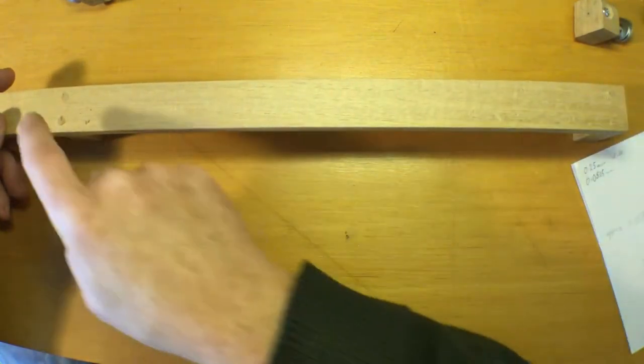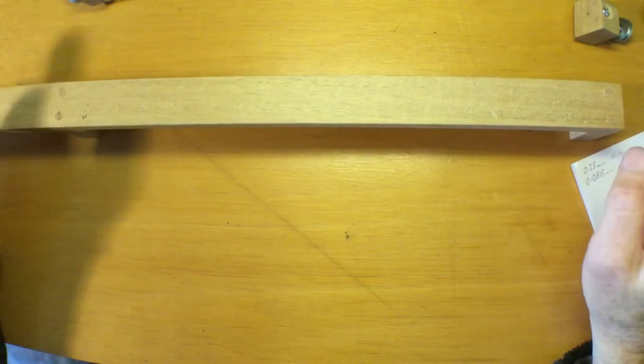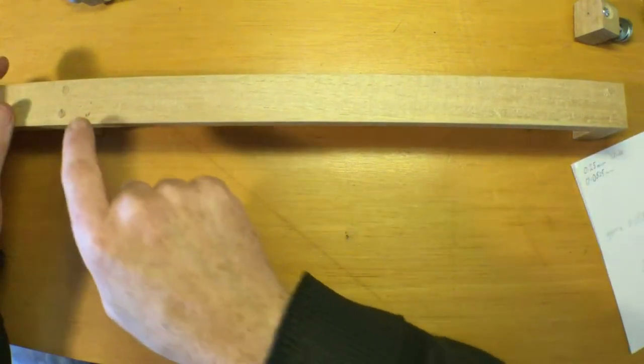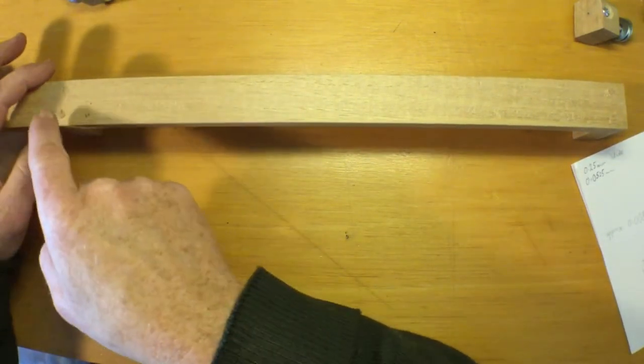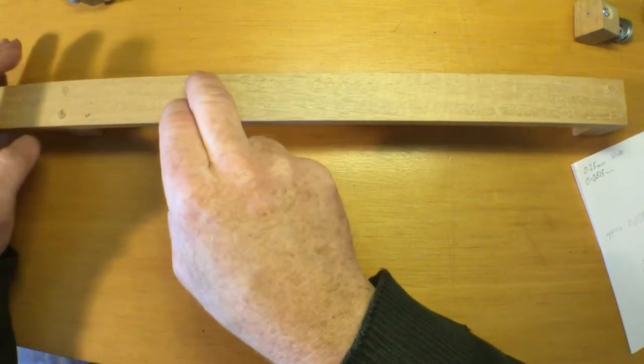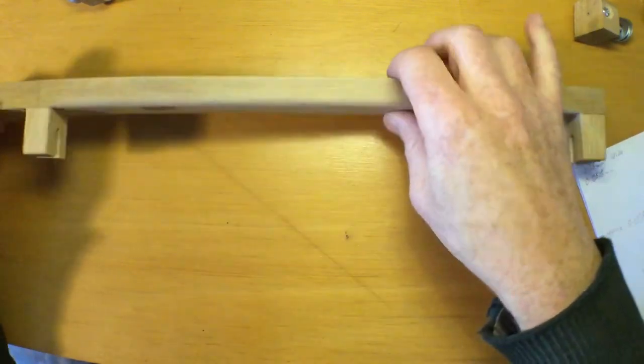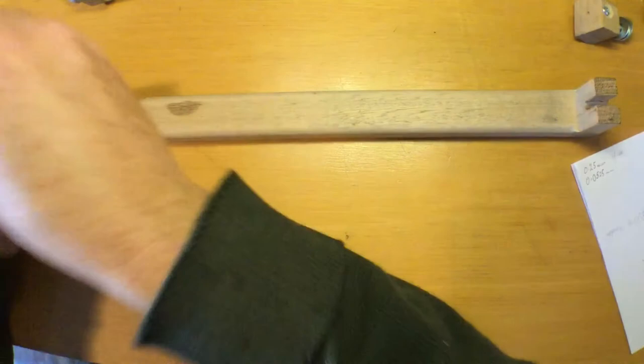An alternative method might be, if you will do hairsprings of different lengths, and you have a good dowling jig, is to drill a succession of holes so that you can move one of the end blocks according to the length of spring you wish to make.